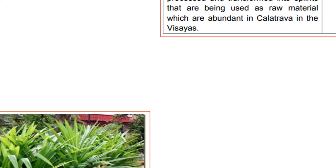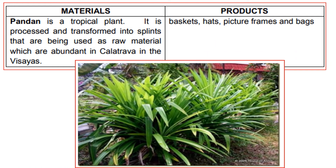The next material is pandan, a tropical plant. It is processed and transformed into splints that are used as raw materials. It is abundant in Calatrava in the Visayas. Products include baskets, hats, picture frames, and bags.